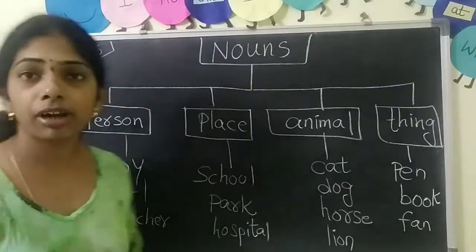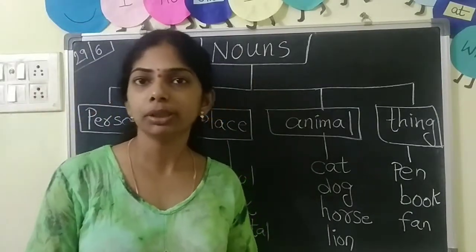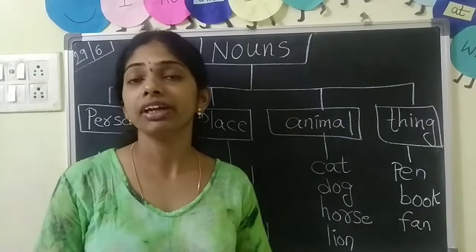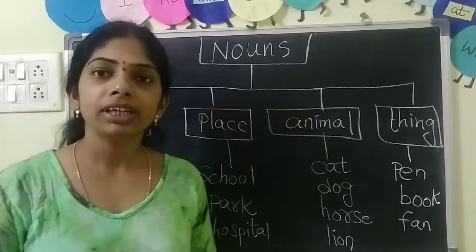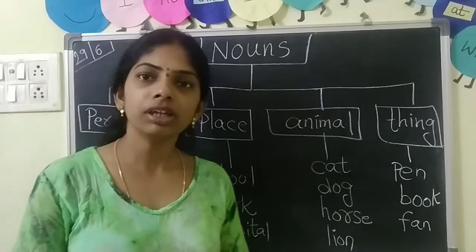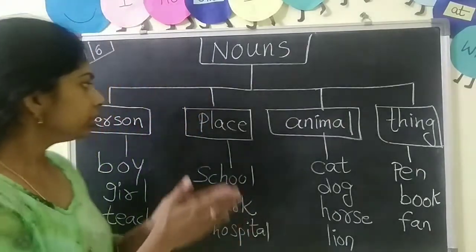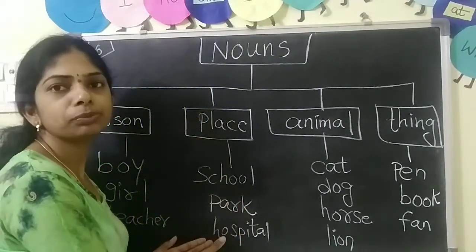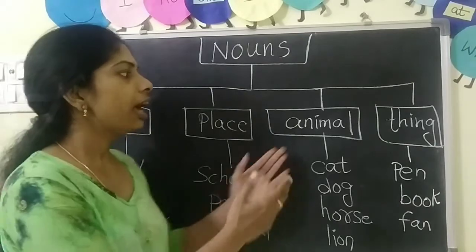Noun can be a place. Place means our house is a place, our school is a place, park is a place, playground is a place. So noun can also be a place name — school, park, hospital. Picture examples.